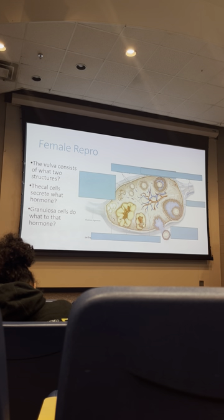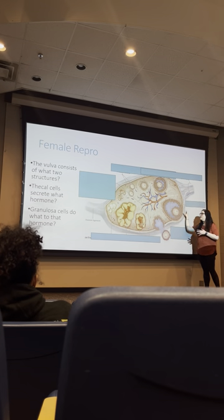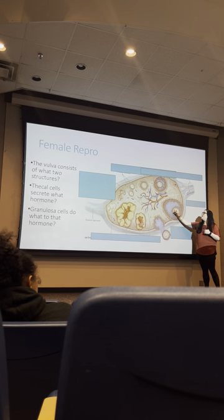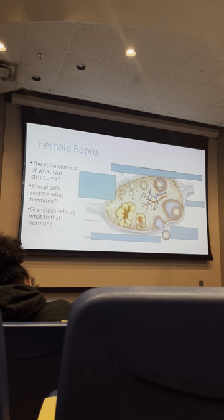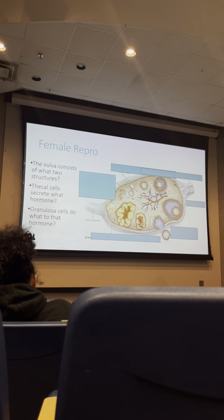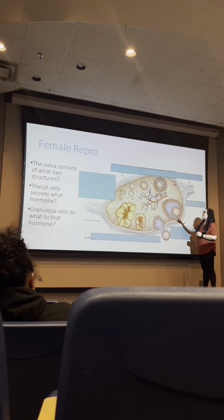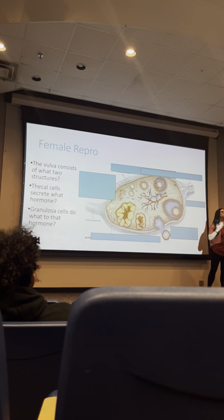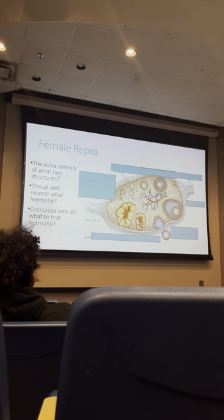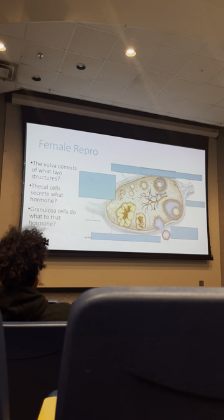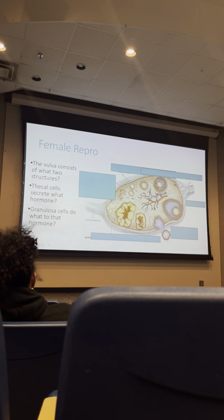The egg in a Graafian follicle is a secondary oocyte. The protein layer outside the egg is the zona pellucida, which protects the egg. The granulosa cells inside the follicle form a radiating crown around the egg called corona radiata cells. The ovary has a medulla region with vasculature, and the follicles are in the cortex.